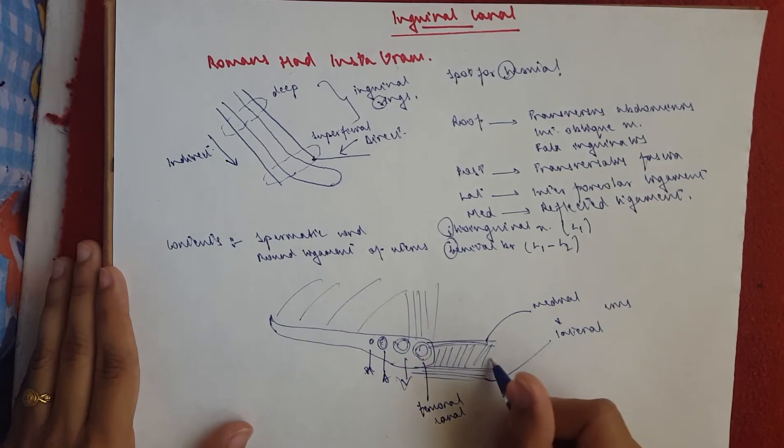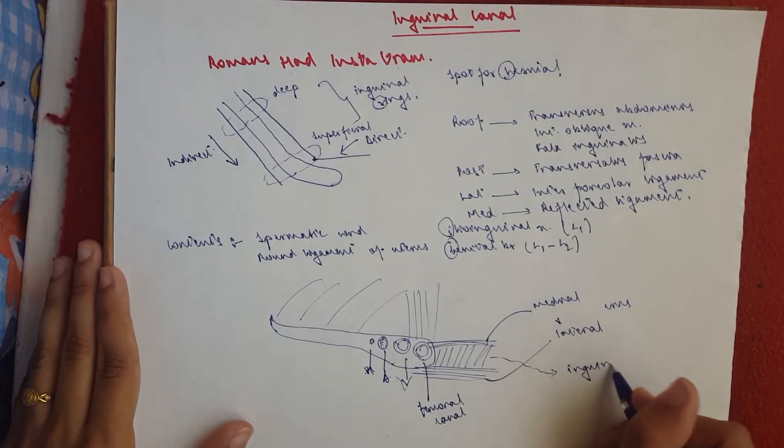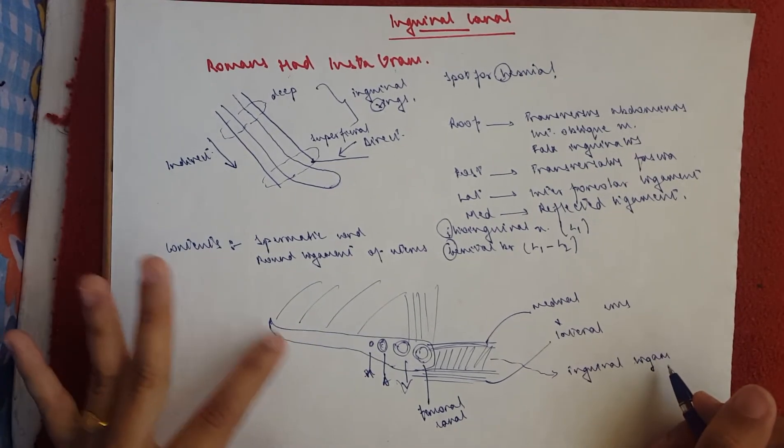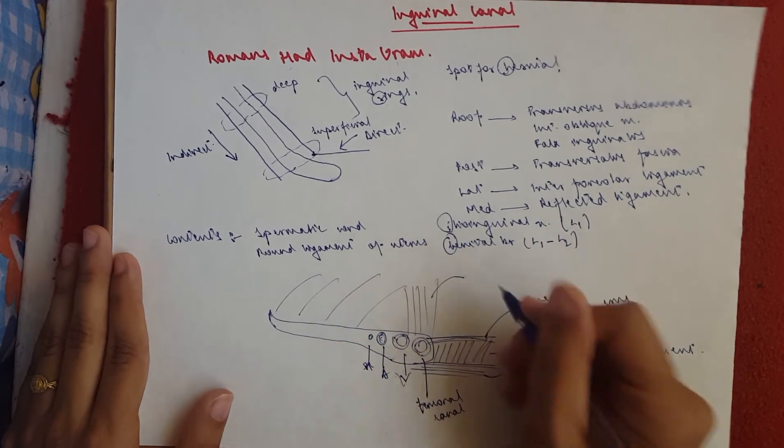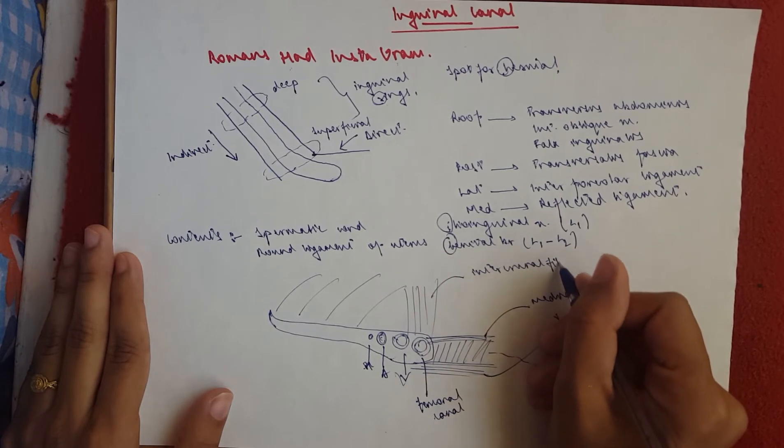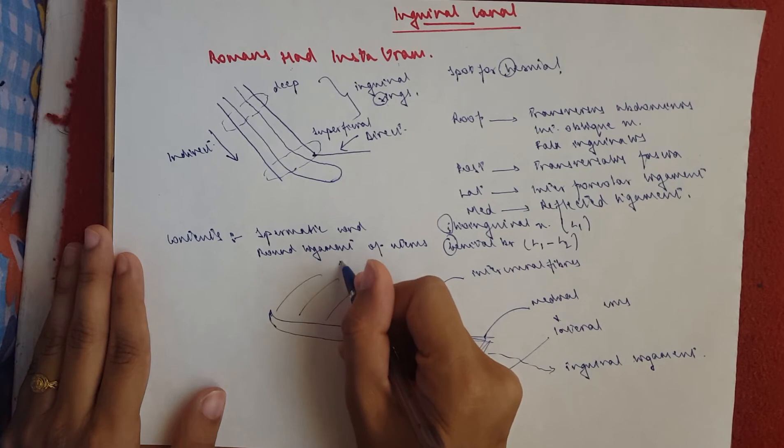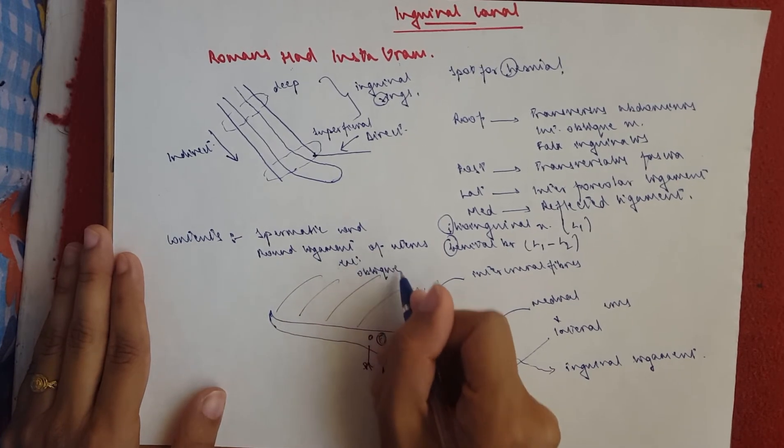And this over here is our inguinal ligament. It runs through, right? So this would also be our inguinal ligament. Then here you've got the inter-crural fibers. Here you've got the aponeurosis of the external oblique.